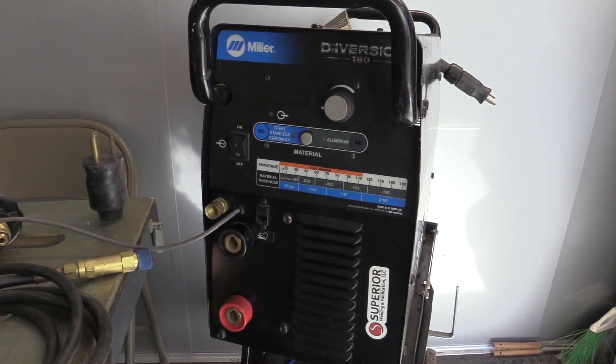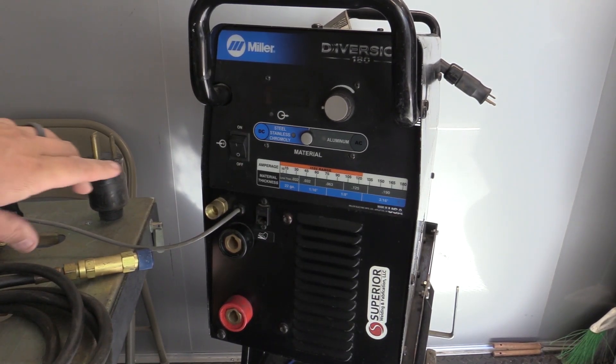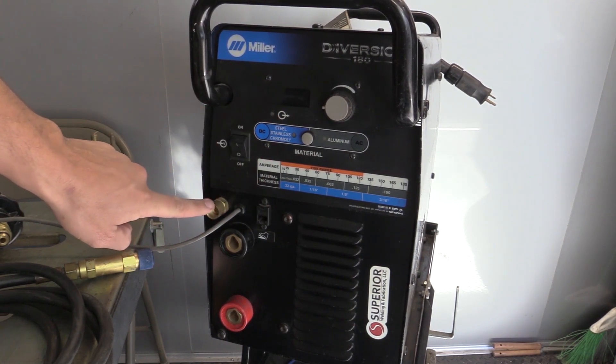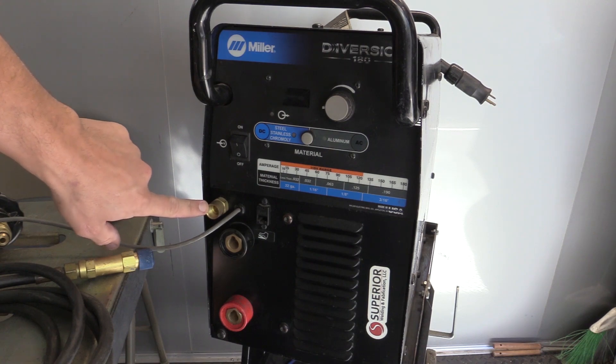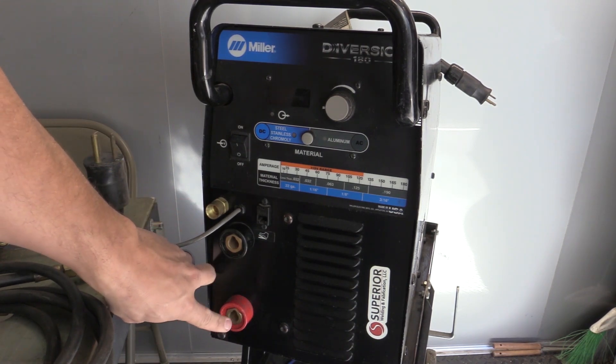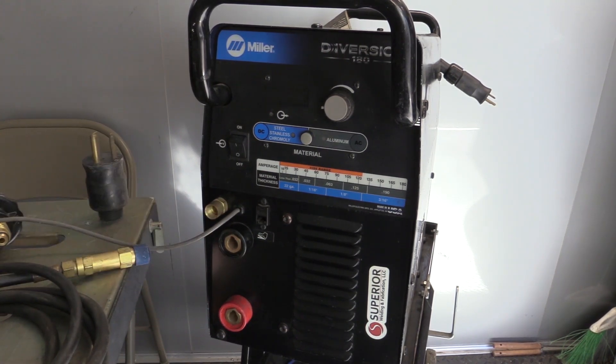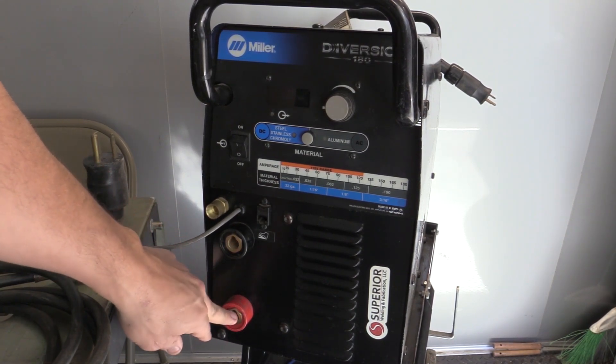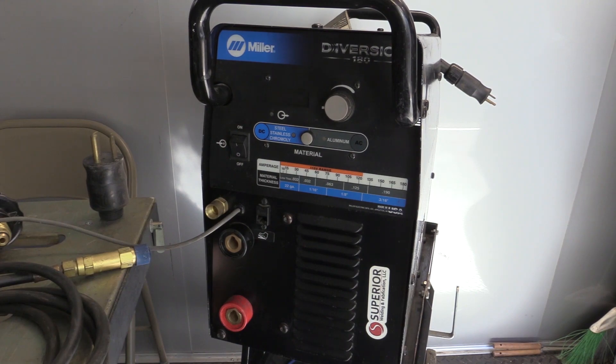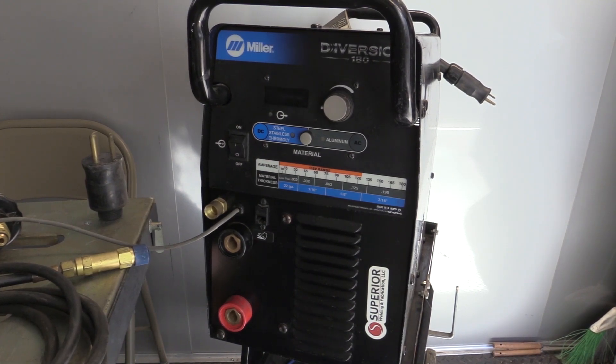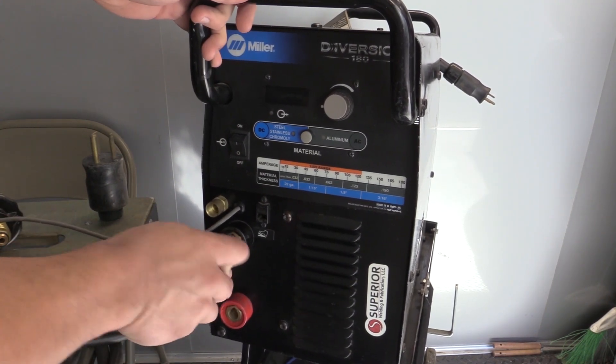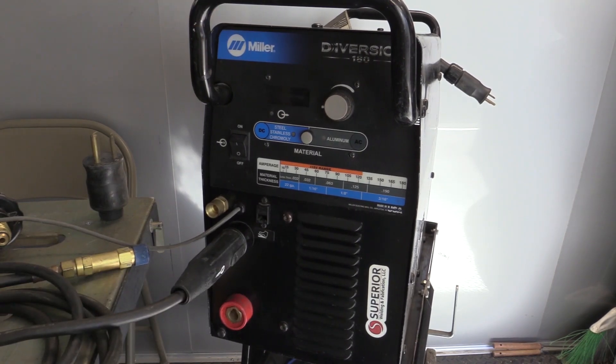This is the front of the Miller Diversion. We have our on-off button. It's a very simple machine. We've got our gas out to the torch, and you'll notice here that this is not the way a Miller Diversion comes factory. These have been swapped out for DENS connectors so I can use the traditional DENS like so.